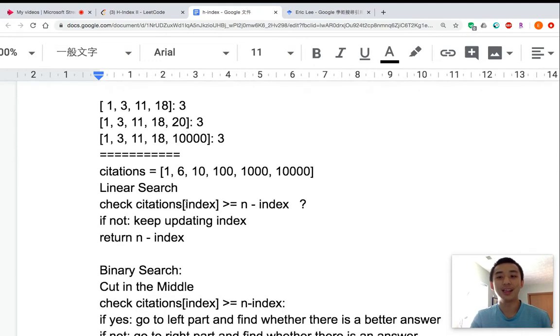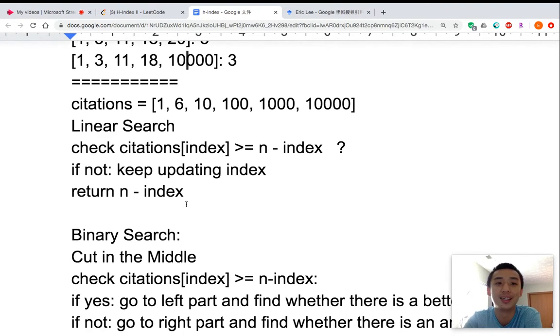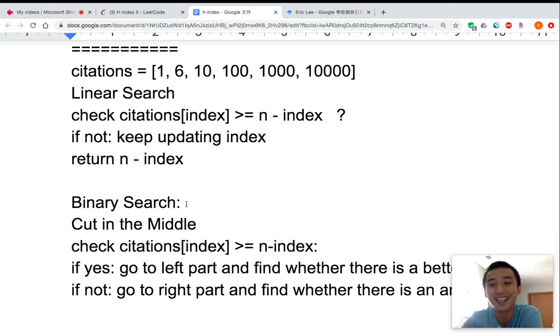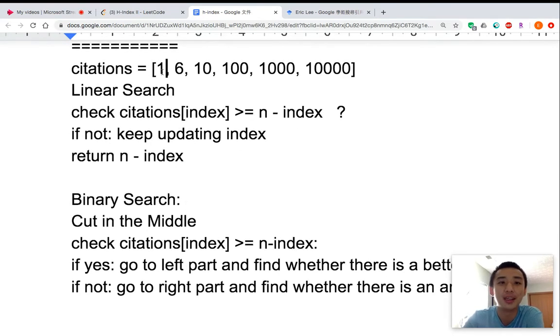Then I want to talk about how to calculate the H-index. First, we have a sorted array of citations. The first solution we can come up with is to use linear search, and we first assume that the H-index is 1, 2, 3, 4, 5, 6.